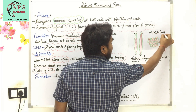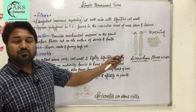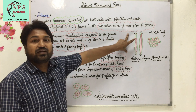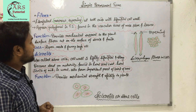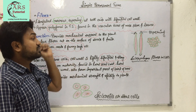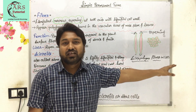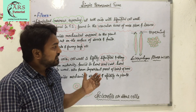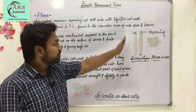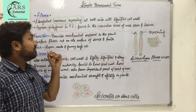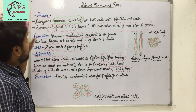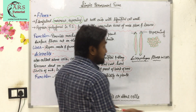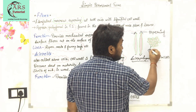In the diagram you can easily identify that the fibers are tapering at both ends. The next point is they appear polygonal in transverse section (TS). LS means longitudinal section and TS means transverse section. So fibers appear polygonal in transverse section, as you can see in the diagram.